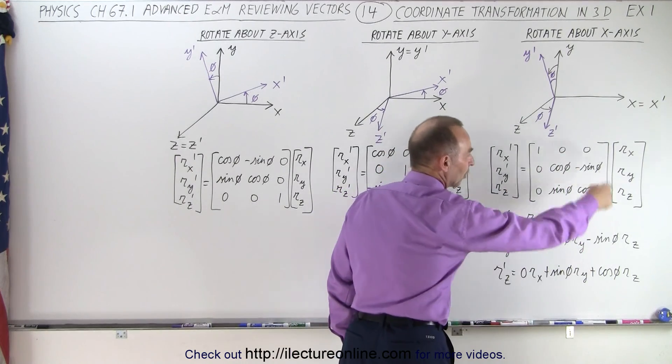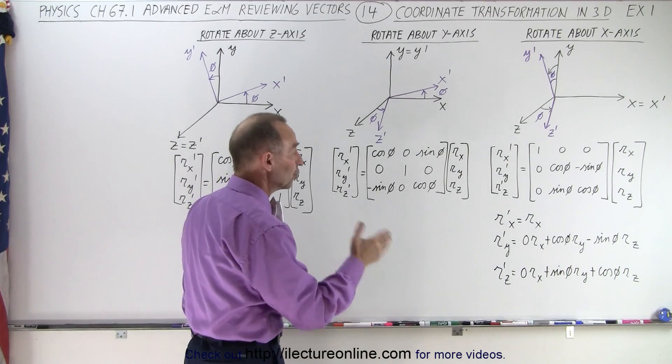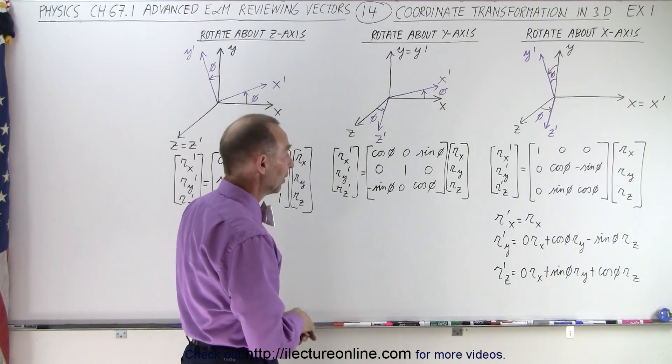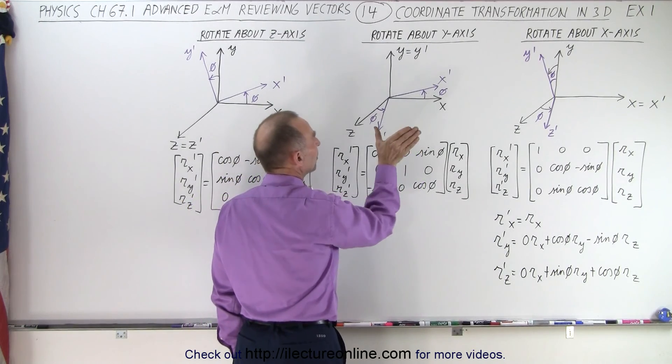So that's how we use the transformation matrix to find the new vector in the new coordinate system or the same vector in the new coordinate system. So here we have the transformation matrix when we take the same coordinate system.